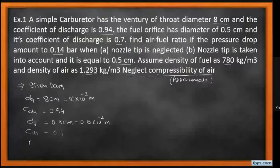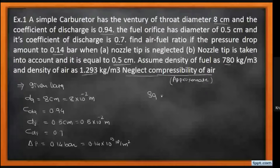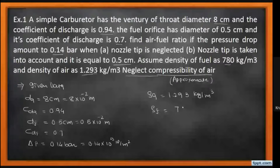Delta P is 0.14 bar, which we convert to 0.14×10⁵ newton per meter square. The density of air is 1.293 kg per meter cube and the density of fuel is 780 kg per meter cube.